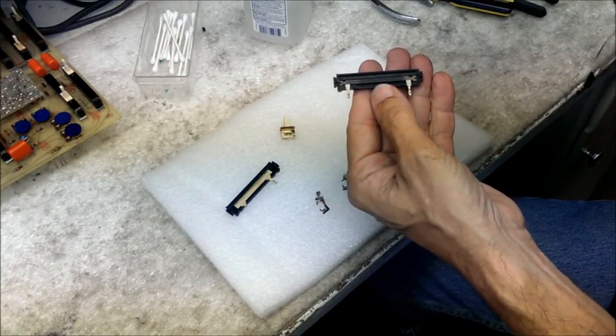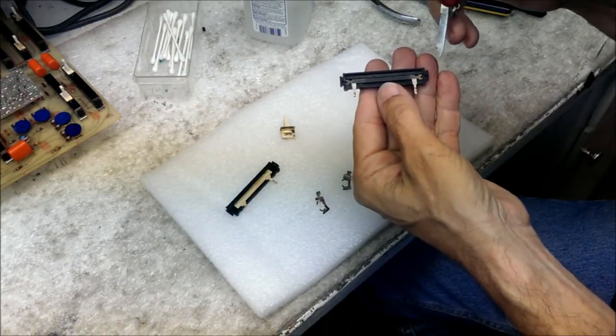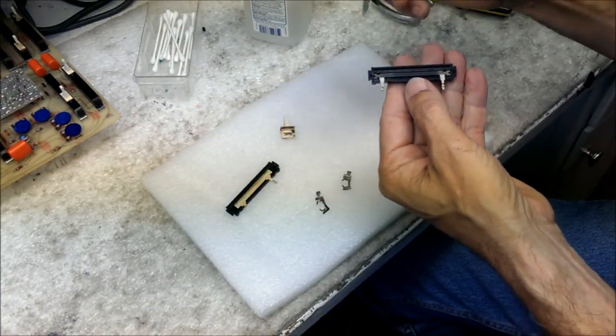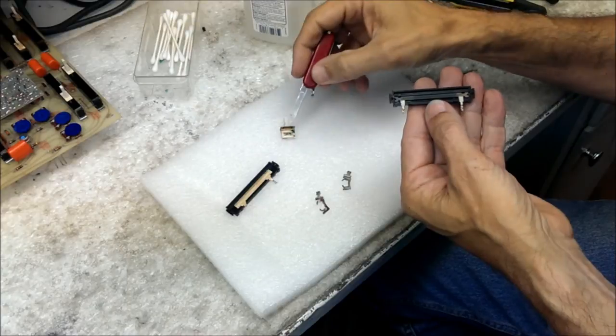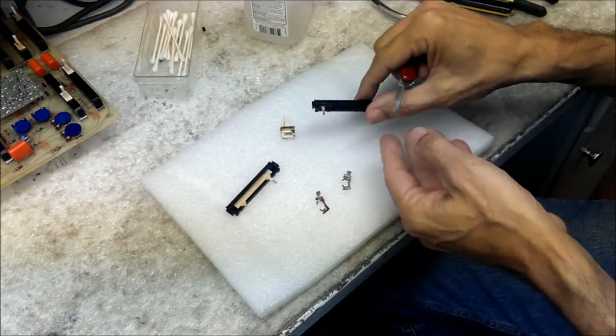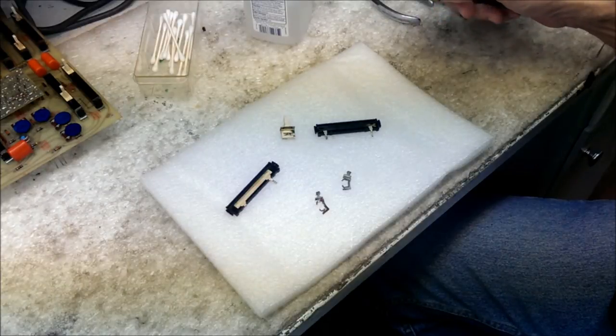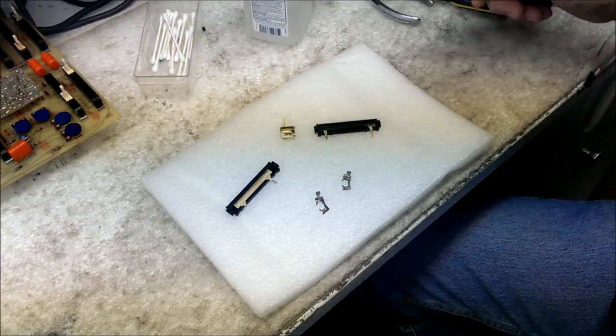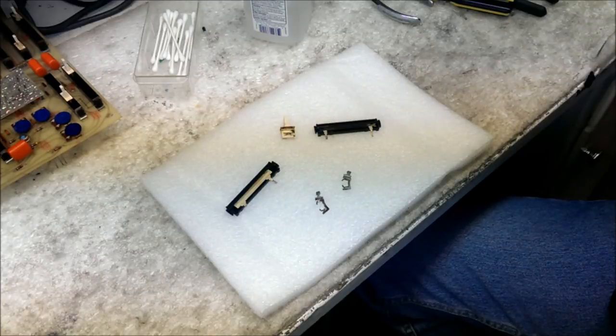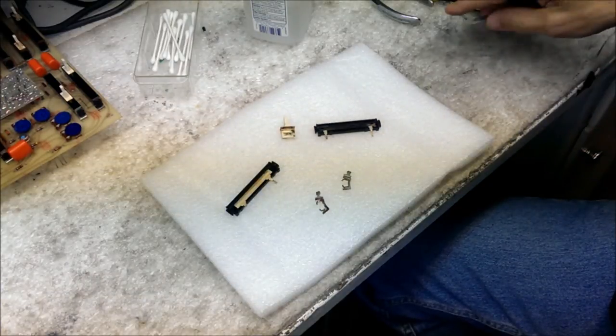So wherever there's gunk and goop and dirt, it's going to degrade the workings of this pot. So we want to get this surface clean. We want to get that surface clean. We want to get the contacts on the shaft clean. And then the last thing we want to worry about also is we want the pot to work smoothly. So we'll get into doing a little bit of lubrication of that later.